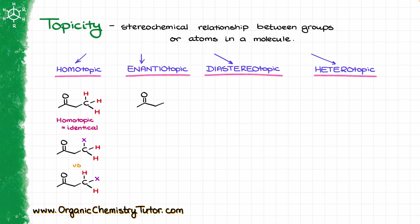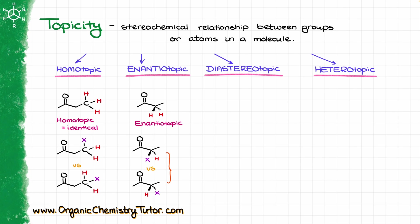Now let's look at the same starting molecule again. But now, instead of the hydrogens of the CH3 group, I'm going to focus on the two hydrogens in the middle of the molecule. If I do the same trick as in the previous example — where I take my hydrogens and replace them with an X — I will end up with the following pair. If we compare these two molecules, we can see that they are actually enantiomers of each other. And since the two molecules I ended up making by replacing my hydrogen with an X are enantiomers, we are going to say that those hydrogens are enantiotopic.